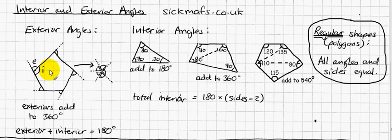So now you know what they are, let's talk about exterior angles first because they're the easier ones to work out. Because they follow this very simple rule that exterior angles always add up to 360 degrees.